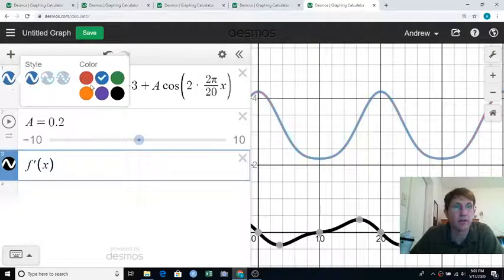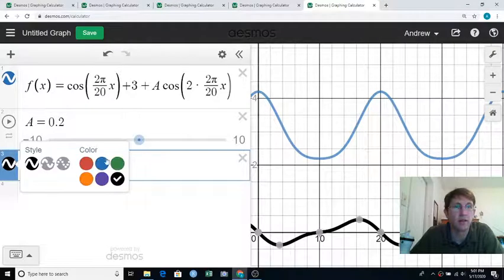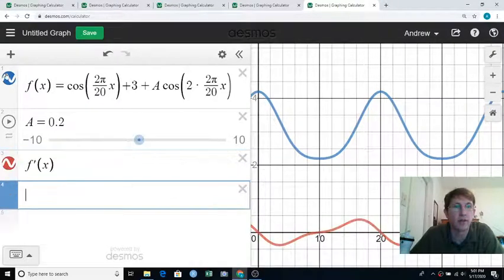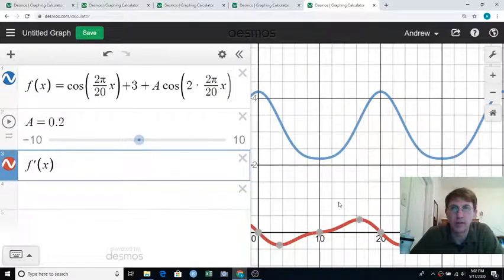Actually, I want to turn this to blue and this to red because that's my color system. Blue for the original, red for the first derivative. So what can I say about where f is concave up or concave down based on the derivative?